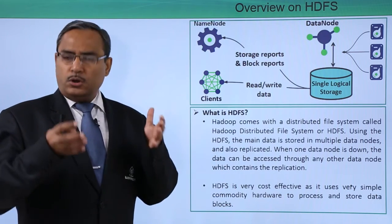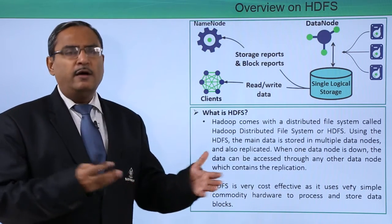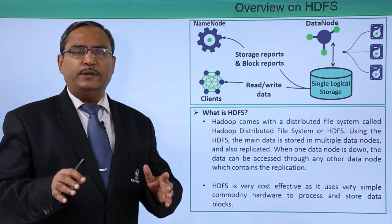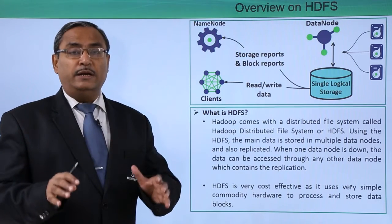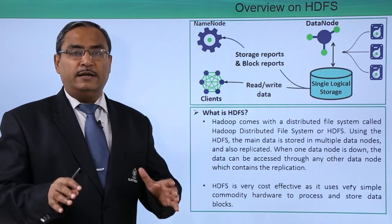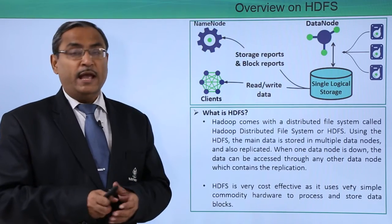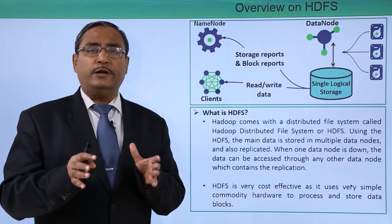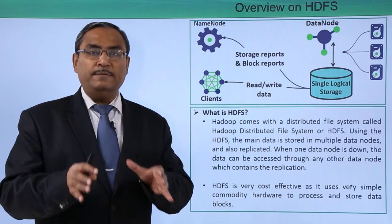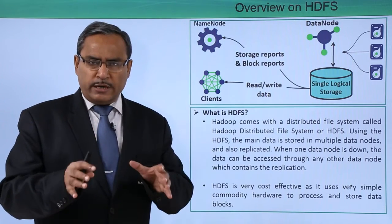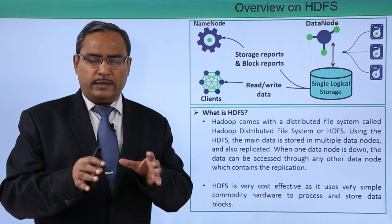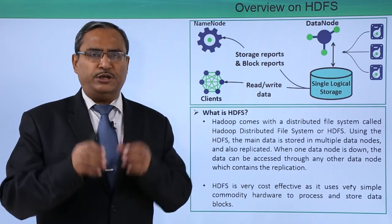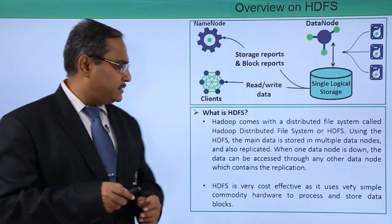Whenever one node goes down, we can get the data from other nodes. So failure transparency will be there and availability will be higher in this case. The hardware used here is known as commodity hardware, where it will be storing all this data. Commodity hardware means cheap hardware, so the storage cost will be very cheap in the case of HDFS.